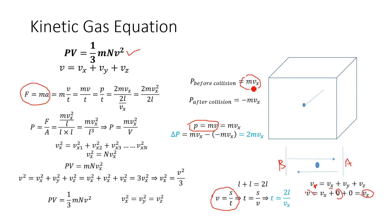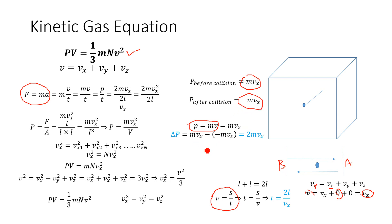So the momentum of the particle before collision is mvx. When the particle collides with side A, it reflects back — this is considered an elastic collision with no loss of energy. The momentum after collision is −mvx. The change in momentum is: mvx − (−mvx) = mvx + mvx = 2mvx.